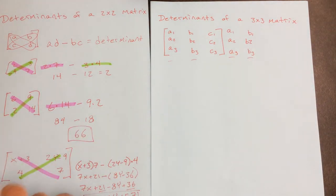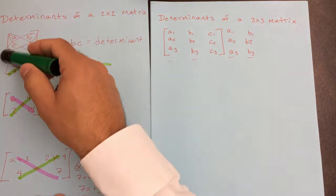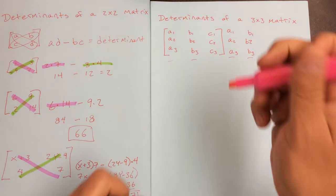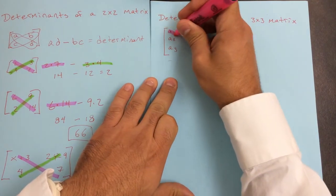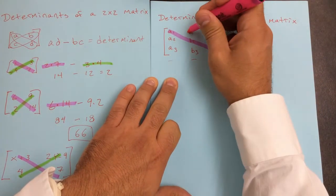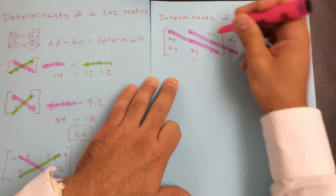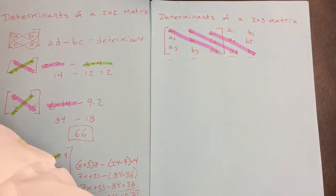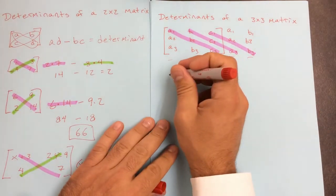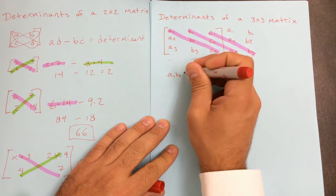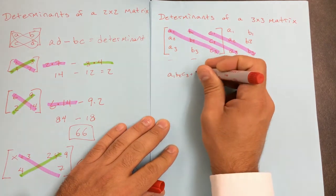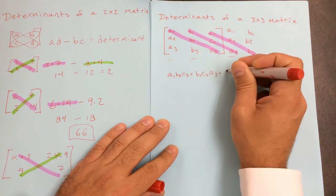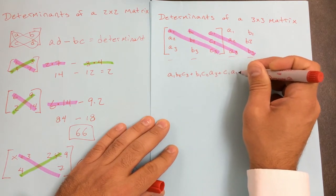Now I'm going to follow the same process. Notice on the 2x2, the positive values came down and to the right — same thing here. I'm going to multiply these three diagonal groups together and add their products. So it's going to be A1·B2·C3 plus B1·C2·A3 plus C1·A2·B3.